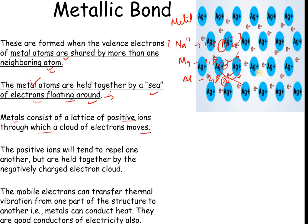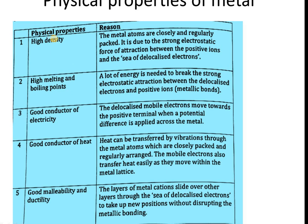A metal consists of a lattice of positive ions through which a cloud of electrons moves. The positive ions are held in fixed positions attracted to the electrons. Positive ions would tend to repel one another, but they are held together by the negatively charged electron cloud, keeping the structure overall balanced. The mobile electrons can also transfer thermal vibrations, which leads into the physical properties of metals.